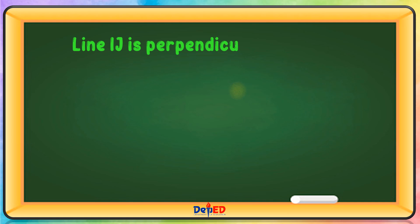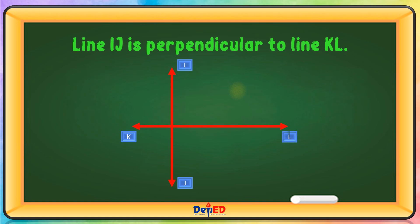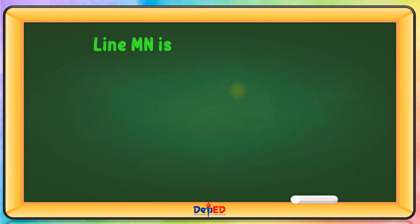Line IJ is perpendicular to line KL. They make a 90-degree angle.